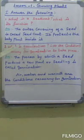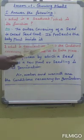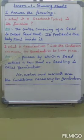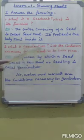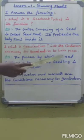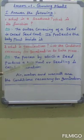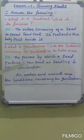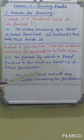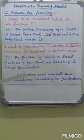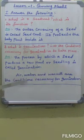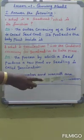Second question: What is germination? List the conditions necessary for germination to take place. Answer. The process by which a seed produces a new plant or seedling is called germination. Air, water, and warmth are the conditions necessary for germination.